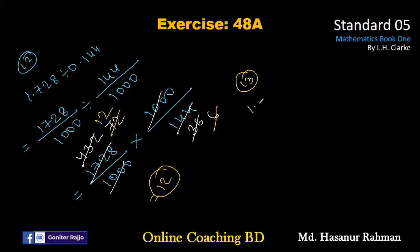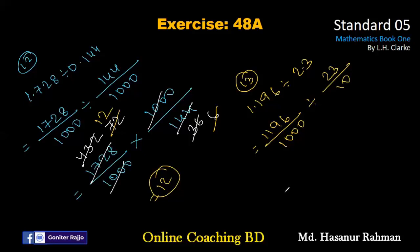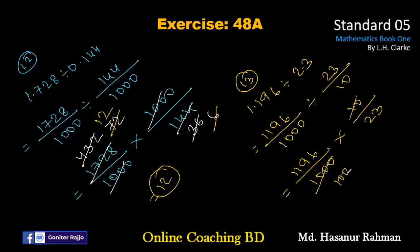Number thirteen says 1.196 divided by 2.3. 1.196 actually represents 1196 divided by 1000, and 2.3 represents 23 by 10. So we have 1196 divided by 1000 multiplied by 10 divided by 23. Dividing 1000 by 10 gives 100, and 1196 divided by 23 gives 52. Our answer is 52 divided by 100, which as a decimal is 0.52.